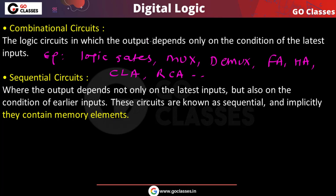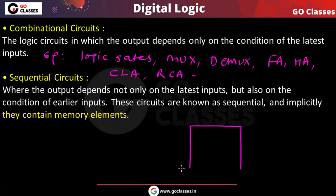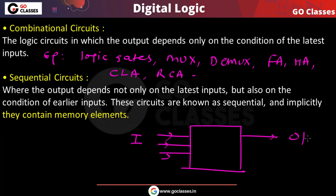In a combinational circuit, you give the input and you get the output — the output only depends on the current input. But in a sequential circuit, the current output depends on both the current inputs and the previous inputs. You can notice that the output depends on previous outputs as well.